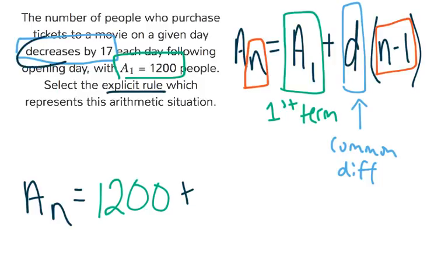But we see here that it's decreasing, not increasing. So let me subtract 17. We're subtracting 17 times n minus 1.